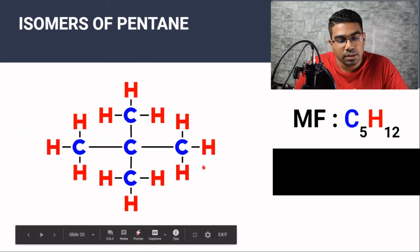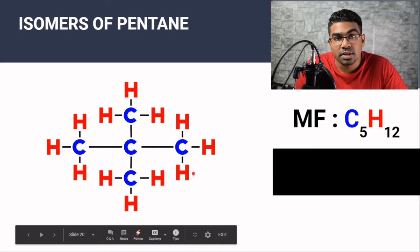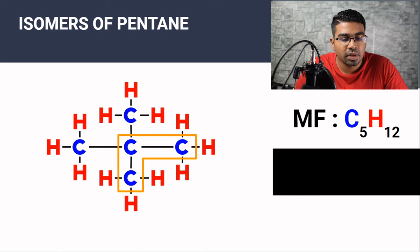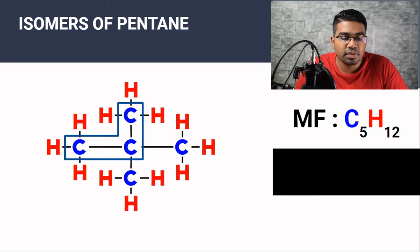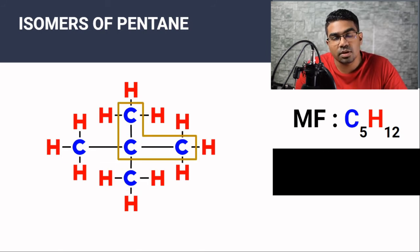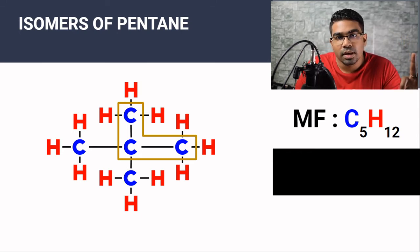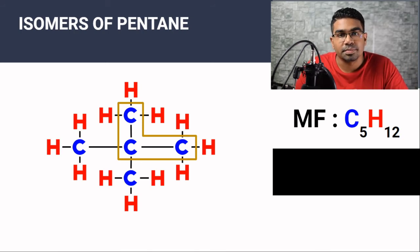Pentane has another isomer. Here is the structural formula of that isomer. Again the first thing we do is find the longest chain. All possible chains that can be formed consist of three carbons, so the longest chain consists of three carbons. With no other functional groups and all carbon-carbon single bonds, the base name would be propane.